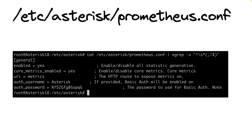Starting with /etc/asterisk/prometheus.conf — this is where we tell Asterisk to expose its metrics. Set the enabled tag to yes. We also set show core metrics to yes, and configure a username and password. This username and password prevents unauthorized access to the exposed Asterisk Prometheus metrics, because without it anyone who knows the URL, port, and IP address could access our metrics. It's a good security layer to enable.